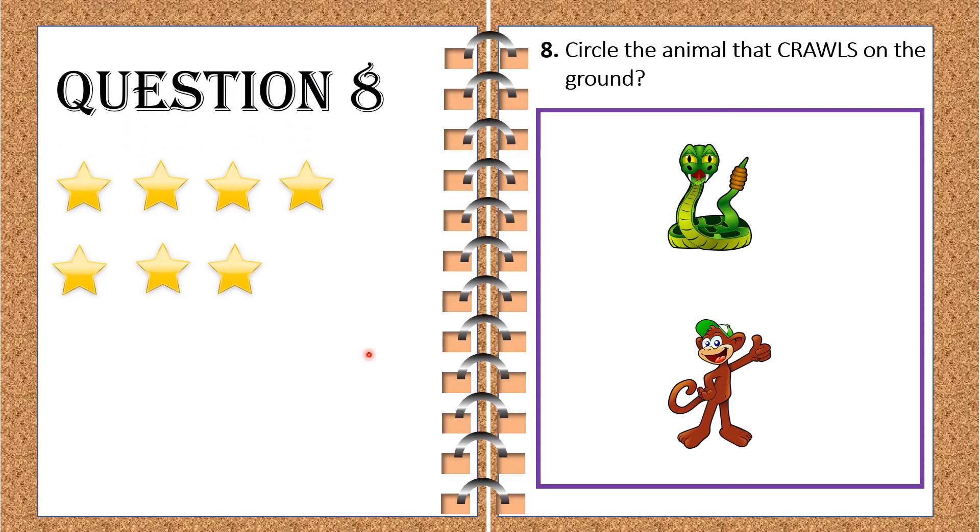And now, question number eight. This question says, circle the animal that crawls on the ground. Is it snake or monkey? That's correct. It's a snake. And we have circle the correct answer. Good job. We get one more star.